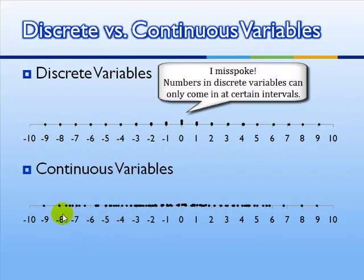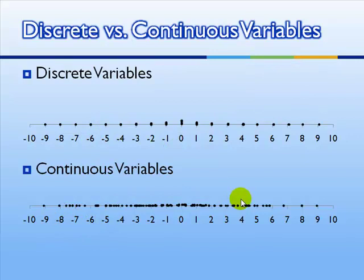A continuous variable can take on any value within a certain range. In a continuous variable, they can come on any value, negative 2.68324, and we can keep on going. We can be as precise as we want. In practice, we have to round eventually. But in theory, a continuous variable, there's no rounding.